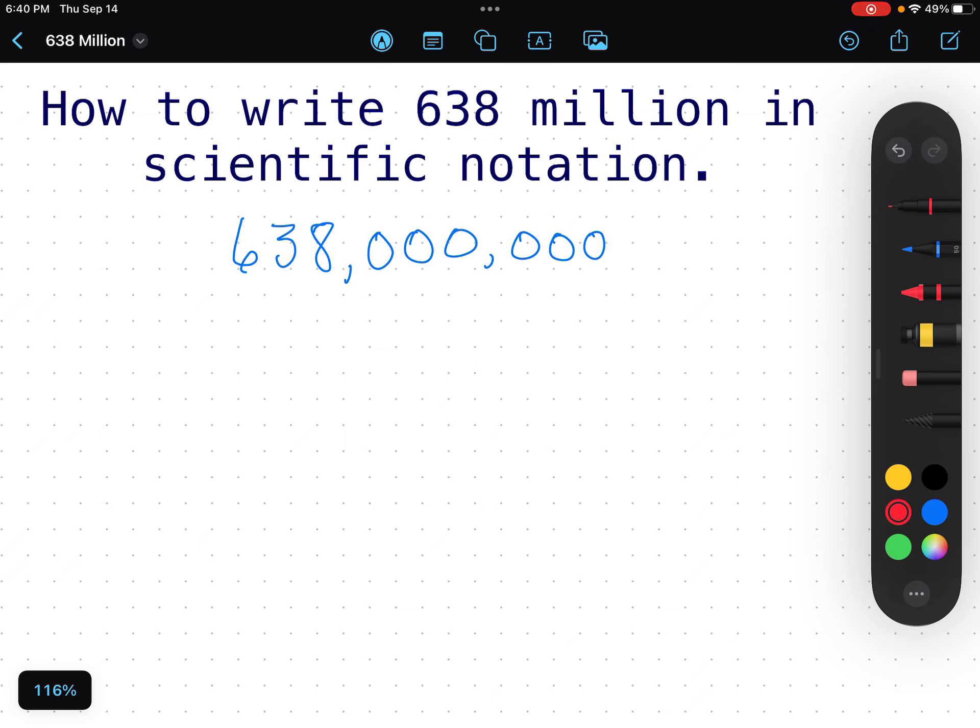What that means is, in standard form, there's always a decimal at the end here that we never write. And I need that decimal point to end up right here. And to get it there, I'm going to have to move it by counting places.